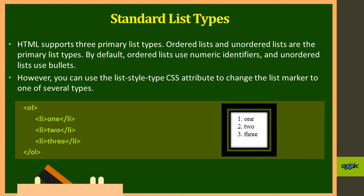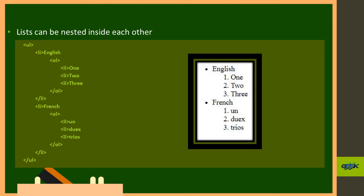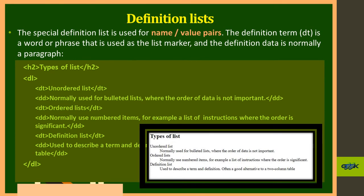You can also nest tags. Here is an example of nesting ordered and unordered lists: two unordered list items 'English' and 'French', each containing a nested ordered list numbered 1, 2, 3. A definition list is another type — a name-value pair used for defining terms. It uses two tags: dt (definition term) and dd (definition data), as shown in the example output.